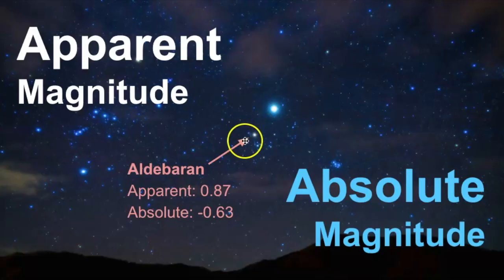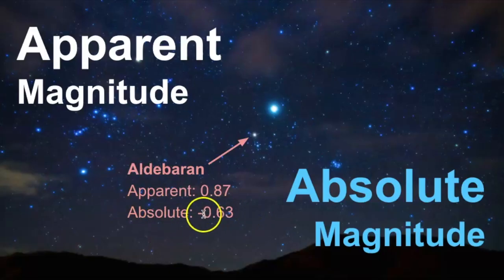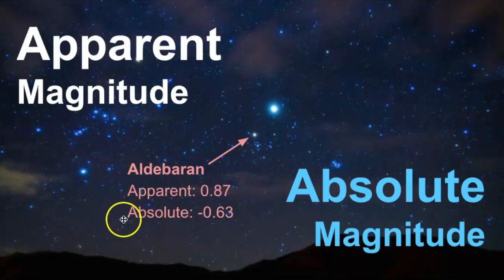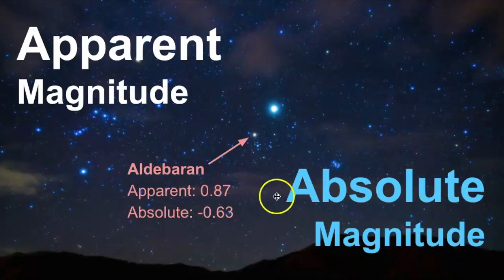So this star here is Aldebaran in the constellation of Taurus. It has an apparent magnitude of 0.87 — very close to one, which tells us it's a bright object. But its absolute magnitude is negative 0.63. I want to explore the difference between negative numbers, which indicate brighter objects, and positive numbers, where the bigger the number the dimmer the star.